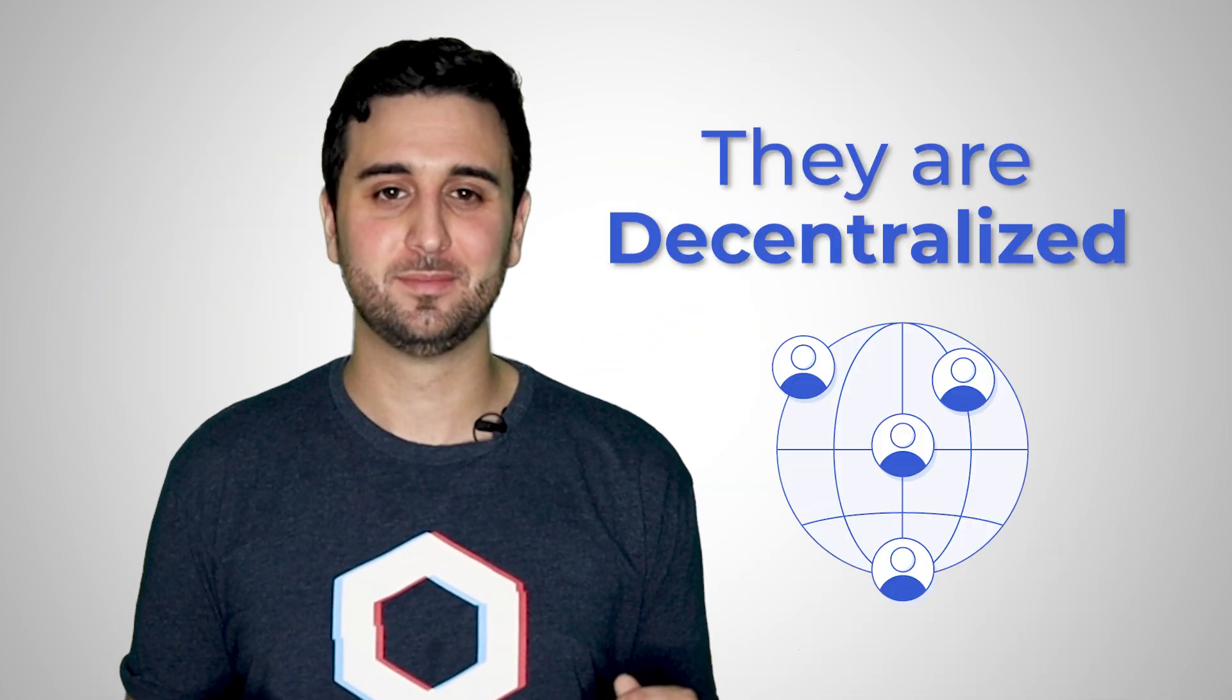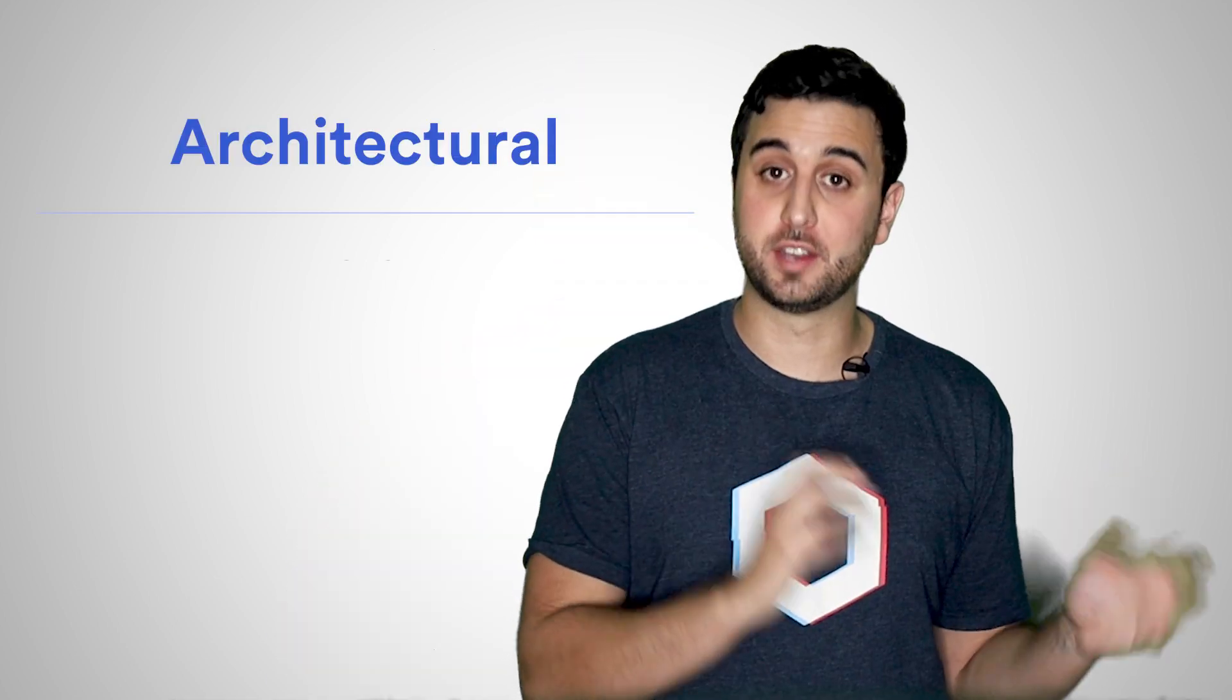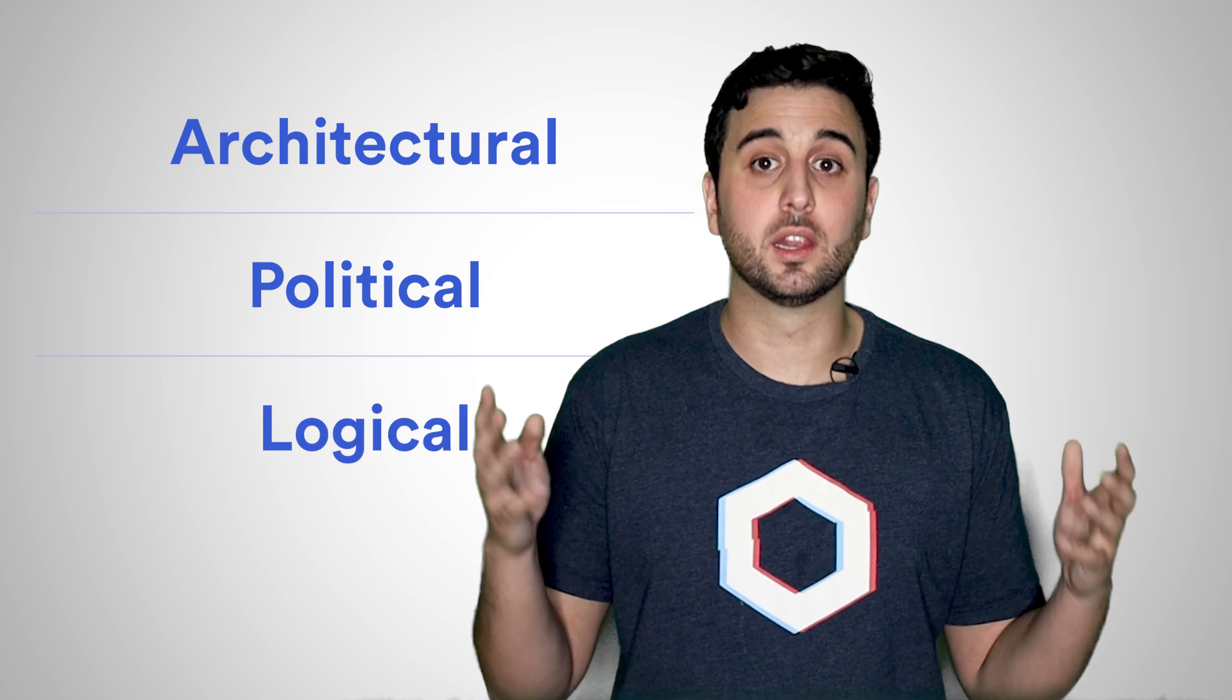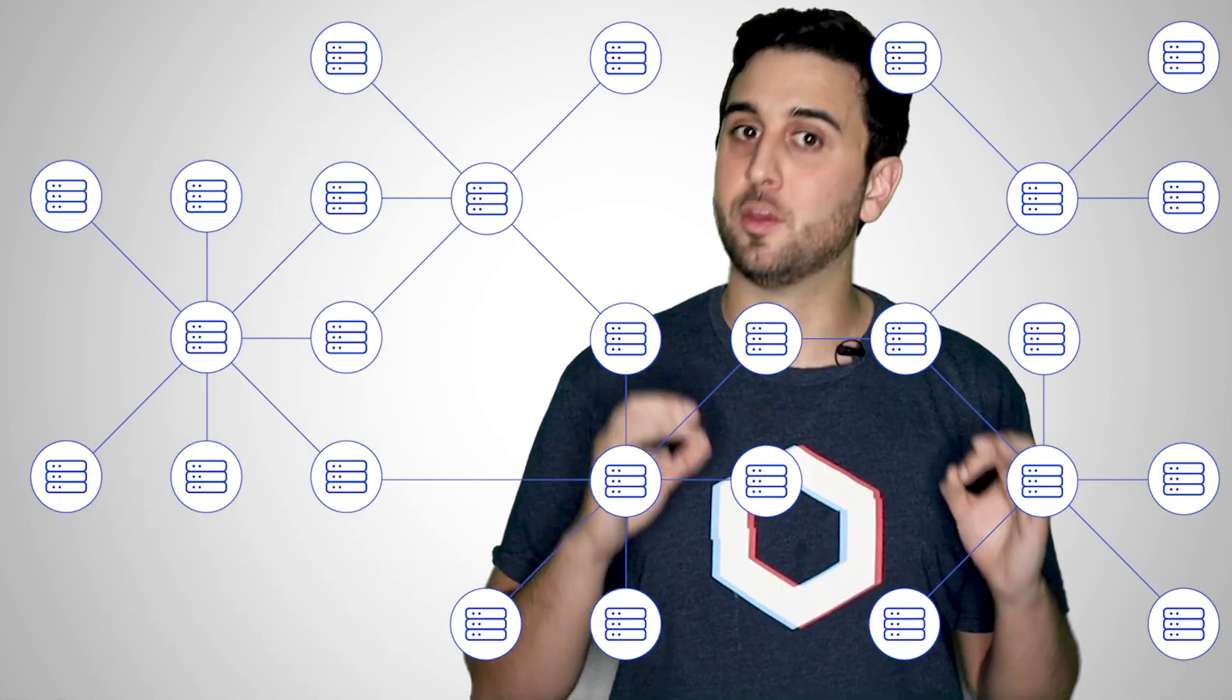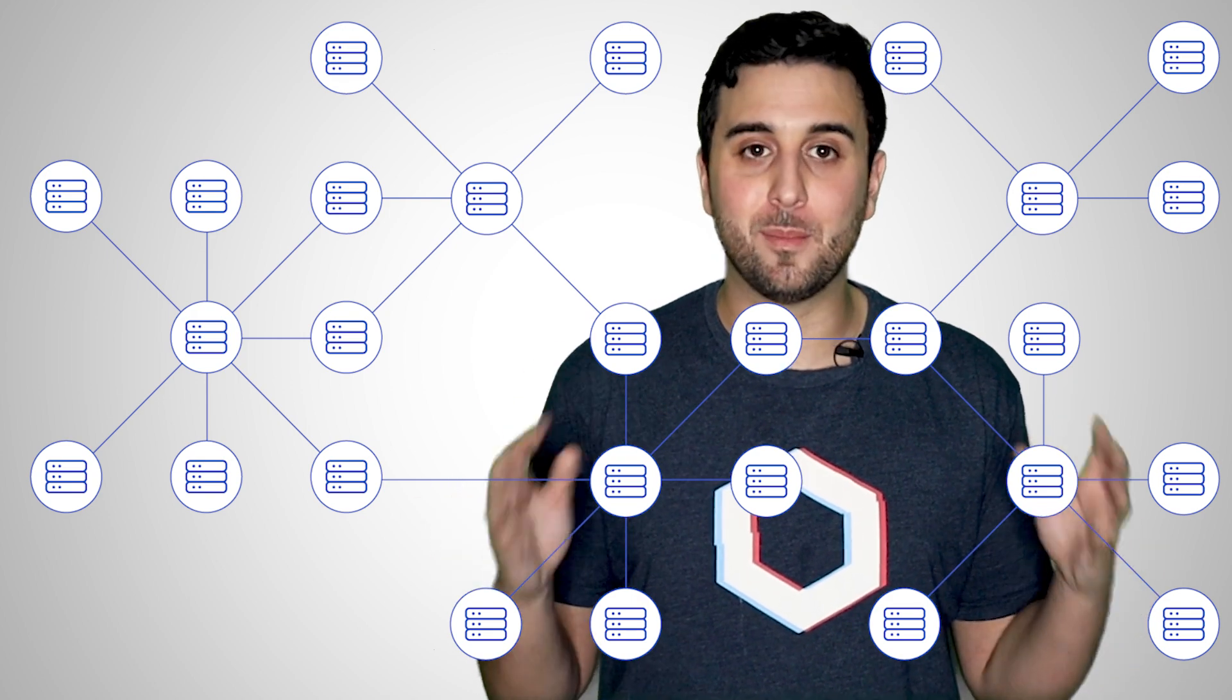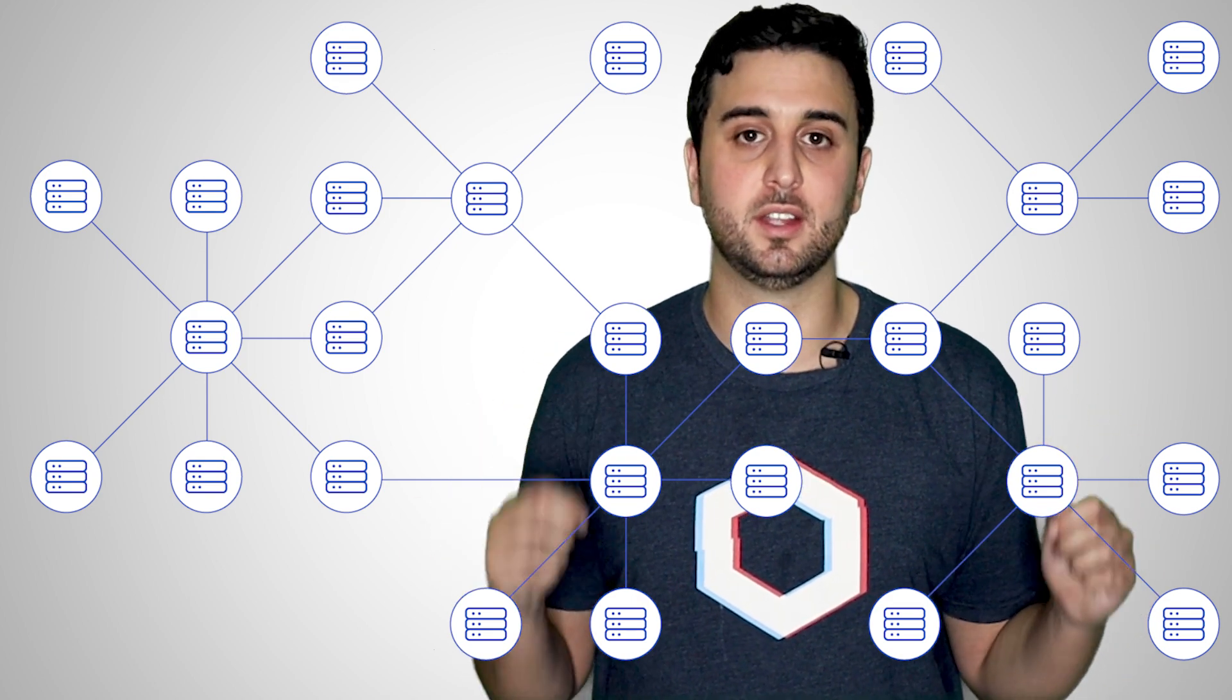They are decentralized. We can define several aspects of blockchain decentralization: architectural, political, and logical. Roughly speaking, the level of architectural decentralization is determined by how many computers participate in a distributed system. The more nodes in a blockchain, the more architecturally decentralized it is.